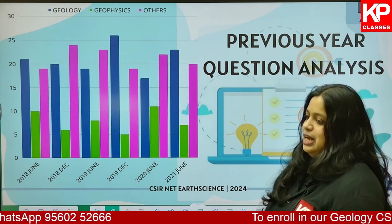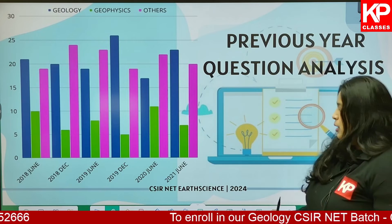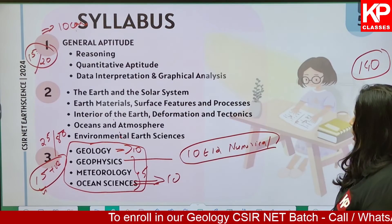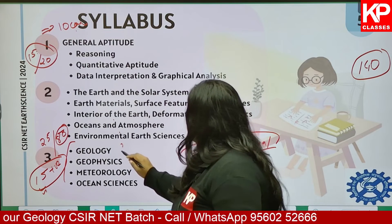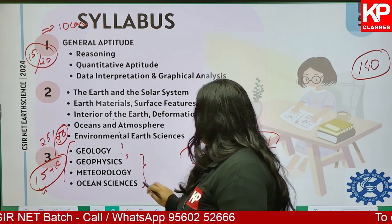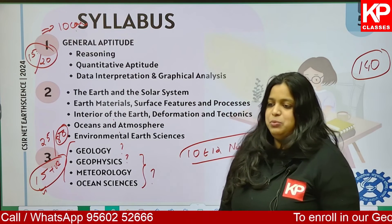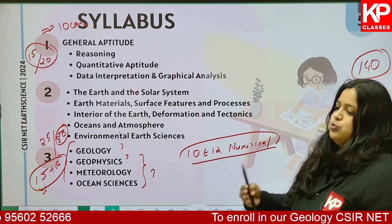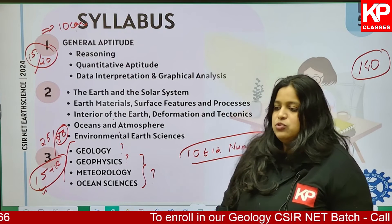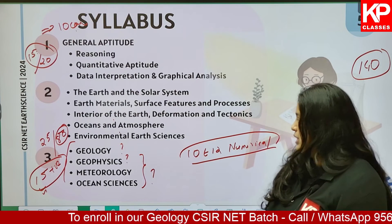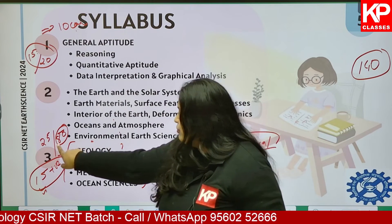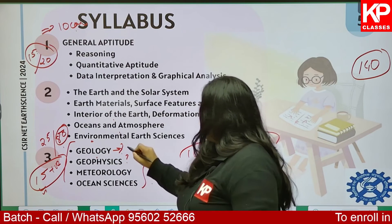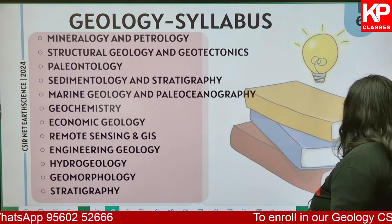Moving on to previous year question analysis — we need to analyze previous year questions to understand how many geology, geophysics, meteorology, ocean science, or planetary science questions appear in the 80 questions of Part C. From this analysis, I found that there are almost equal distributions, with a minimum of 20 geology questions out of 80 in Part C.